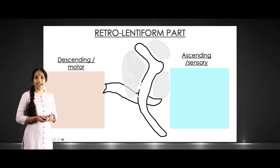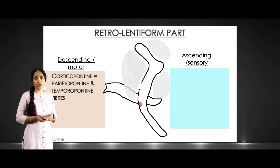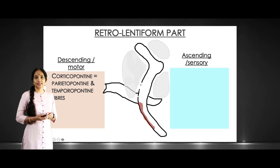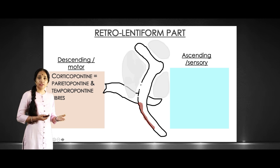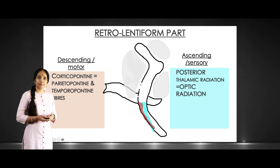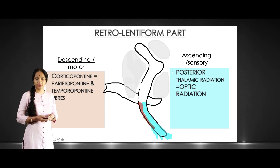The retrolentiform part carries the optic radiation. It does have corticopontine fibers, but since it has reached the back side of the brain, you also have the paritopontine and temporopontine fibers. The ascending pathway consists of the posterior thalamic radiation, which carries optic fibers.